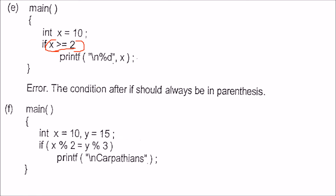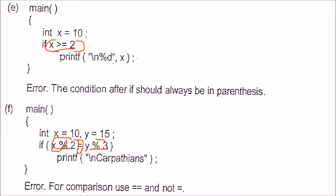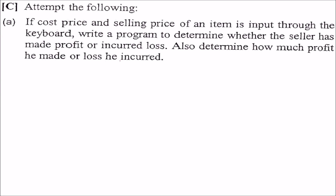x equals 10, y equals 15. x modulo 2 is equal to y modulo 3 — you can use double-equals here because both sides give a number, and a number compared to a number is fine. But using the assignment operator instead of double-equals would be the error; you need to use double-equals, not assignment.